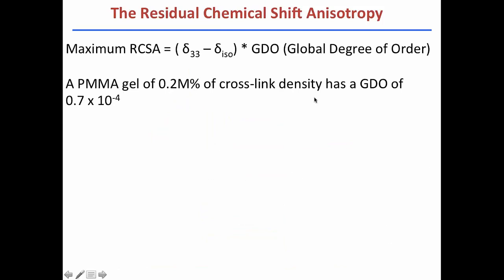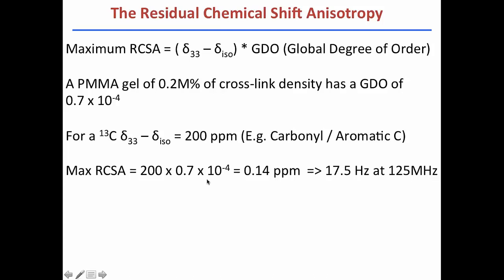Then a PMMA gel, for example, 0.2 molar percent of crosslink density, has a GDO of 0.7 times 10 to the negative 4. That is normally the degree of alignment. So if we consider a carbonyl or an aromatic group in which that distance is 200 ppm, then multiplying 200 ppm and scaling it down by the degree of alignment, we see that probably the maximum RCSA that we will see is 0.14 ppm. And at 125 megahertz, this is the 500 megahertz in proton instrument, the maximum value is 17.5 hertz. And if we have a CH3 group, a CH3 group is 20 ppm. And so the maximum value for a CH3 group is just 1.75 hertz.